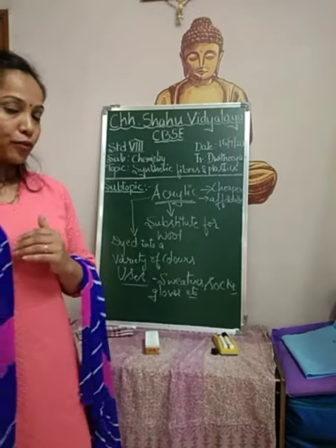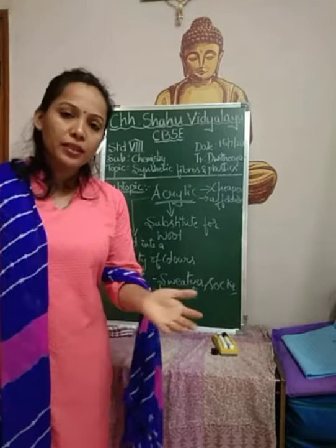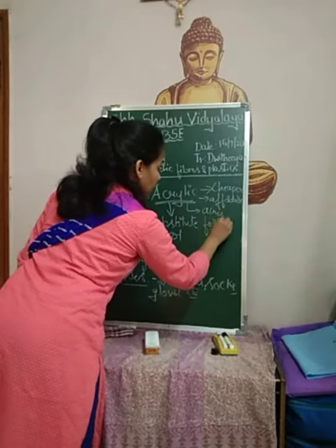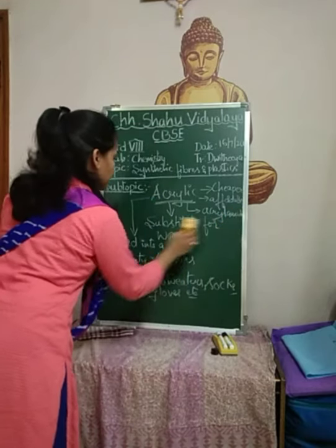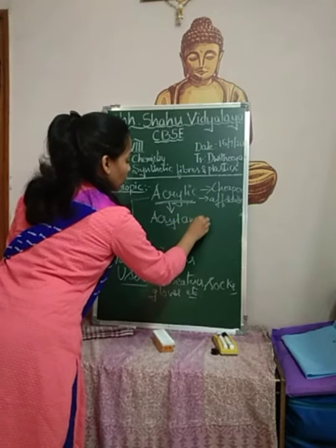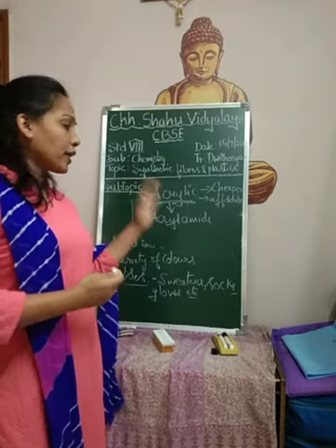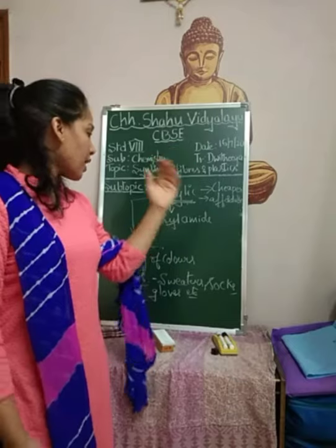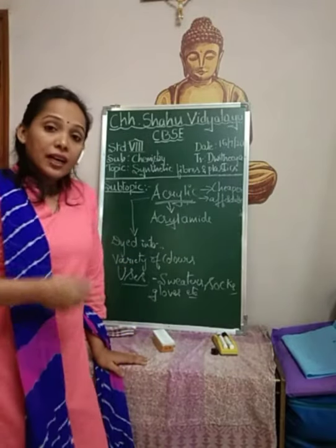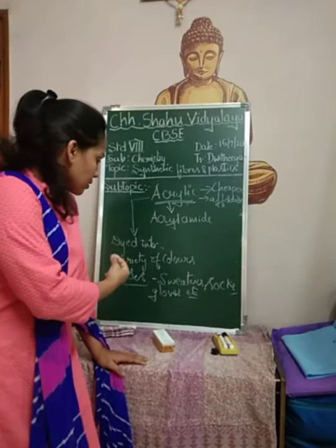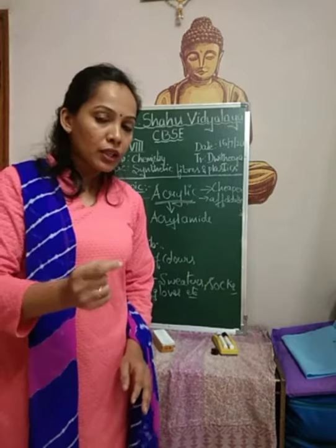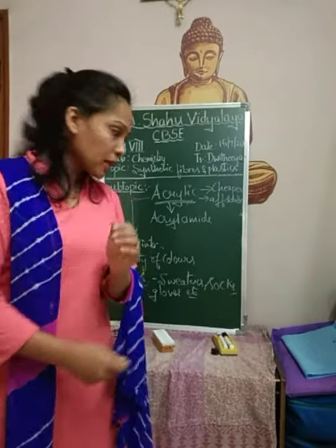Then we came to acrylic. Acrylic is a substitute for wool — it has all the properties similar to wool but is derived chemically. The monomer of acrylic is acrylamide. Acrylamide molecules are chemically linked to one another to get polyacrylamide, which is called acrylic. It is cheaper, affordable, and can be dyed into a variety of colors. Therefore it is the best substitute for wool and is used in making sweaters, socks, gloves, etc. Whatever you see that looks like it is made of wool is actually acrylic nowadays.